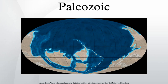The Paleozoic was a time of dramatic geological, climatic, and evolutionary change. The Cambrian period witnessed the most rapid and widespread diversification of life in Earth's history, known as the Cambrian Explosion, in which most modern phyla first appeared. Fish, arthropods, amphibians, and reptiles all evolved during the Paleozoic. Life began in the ocean but eventually transitioned onto land, and by the late Paleozoic it was dominated by various forms of organisms.